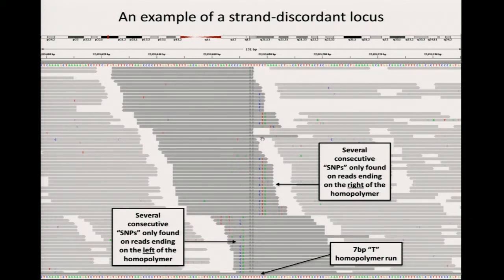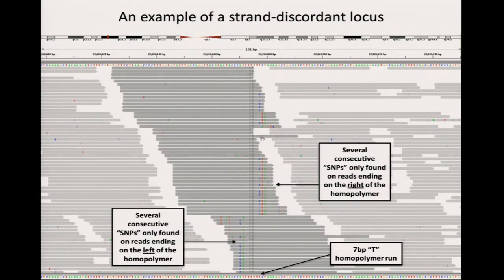Here is an example of these artifacts. In this pileup of an example region of the genome, you can see a homopolymer run. Some reads support the presence of SNPs just after the homopolymer, and other reads support SNPs just before it. The reads supporting SNPs on one side tend to be mapped in one direction, and those supporting SNPs on the other side go the other direction. You don't expect a dependency between read orientation and the presence of SNPs — it's an indication of a problem.